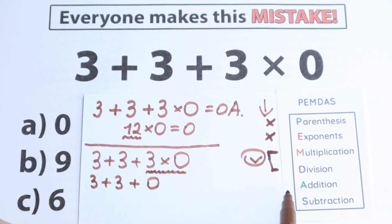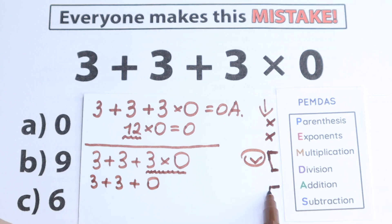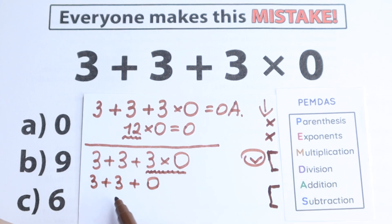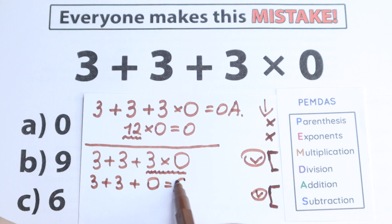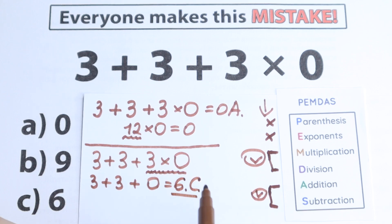The last step is very obvious — a lot of students don't even need PEMDAS for this part, because this is only addition. We complete this step easily: 3 plus 3 plus 0 equals 6, which is option C.